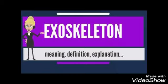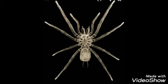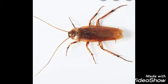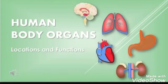Some insects have a skeleton outside their bodies, called an exoskeleton. For example, a spider is an example of an exoskeleton, and a cockroach is also an example of an exoskeleton.